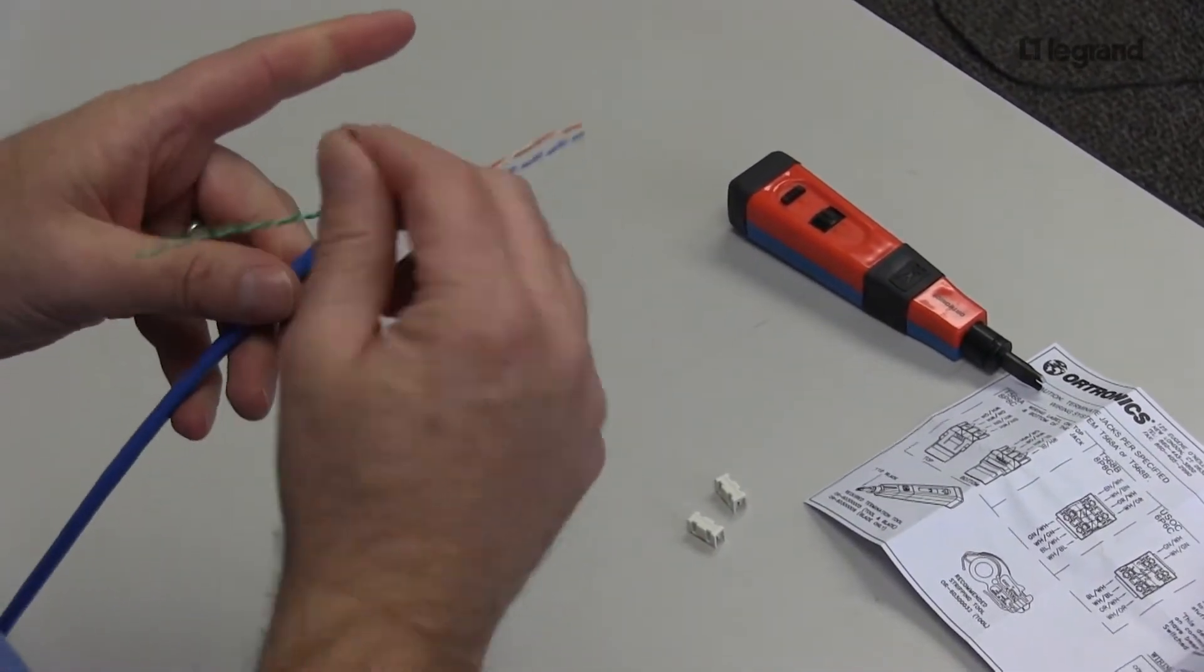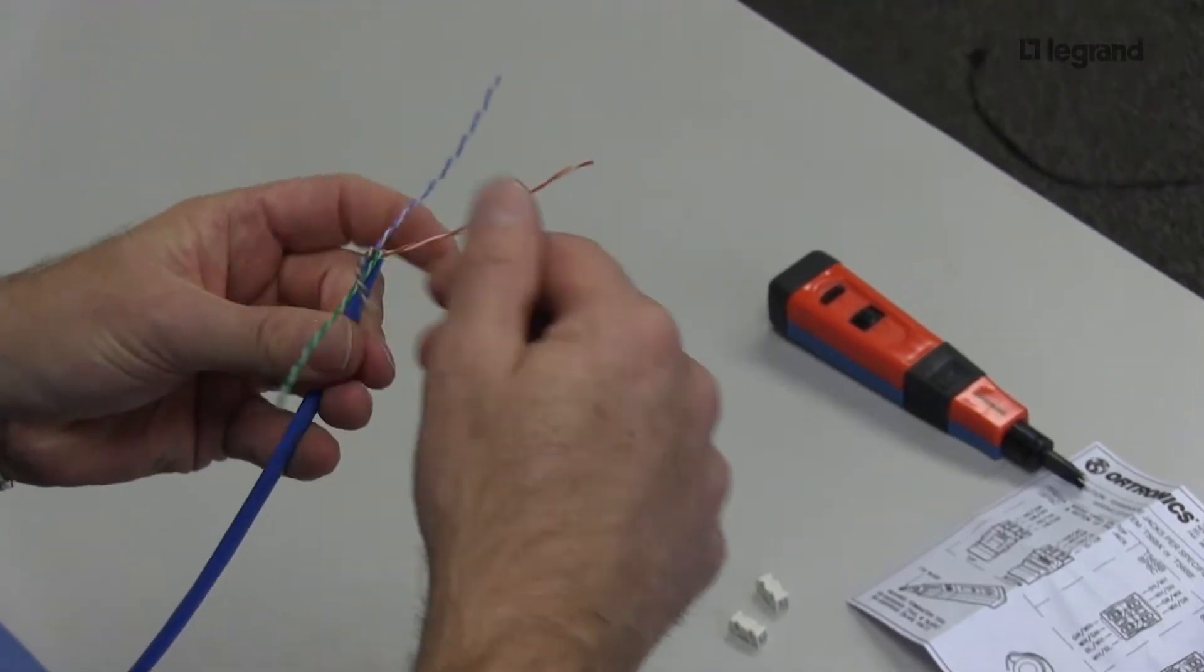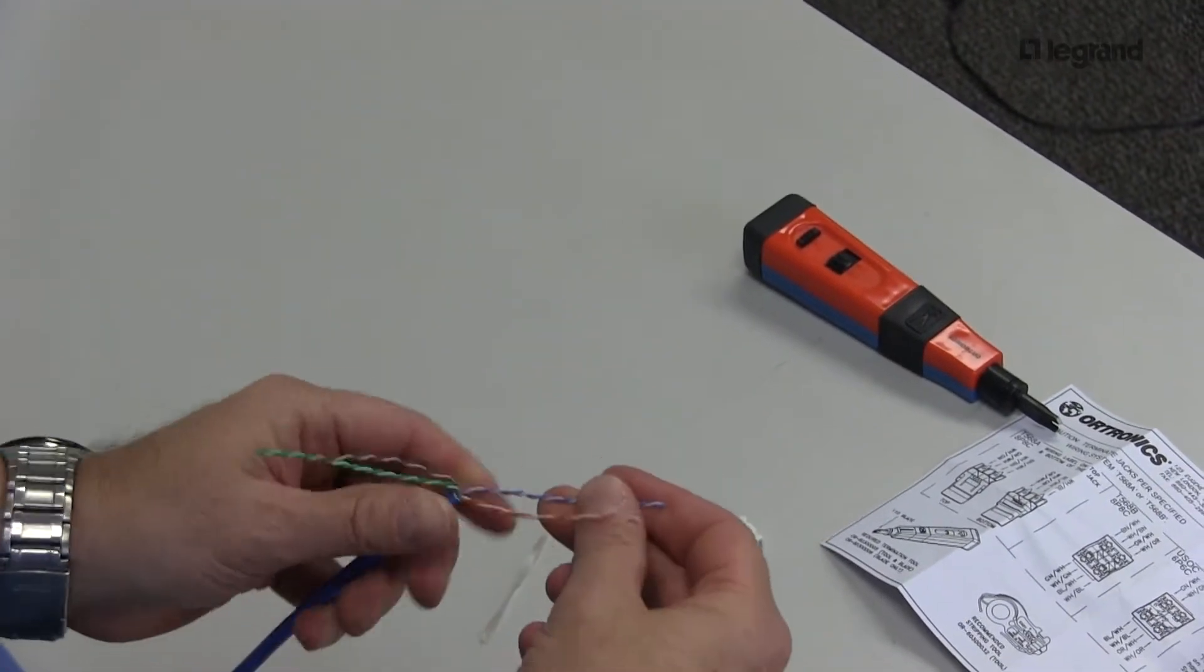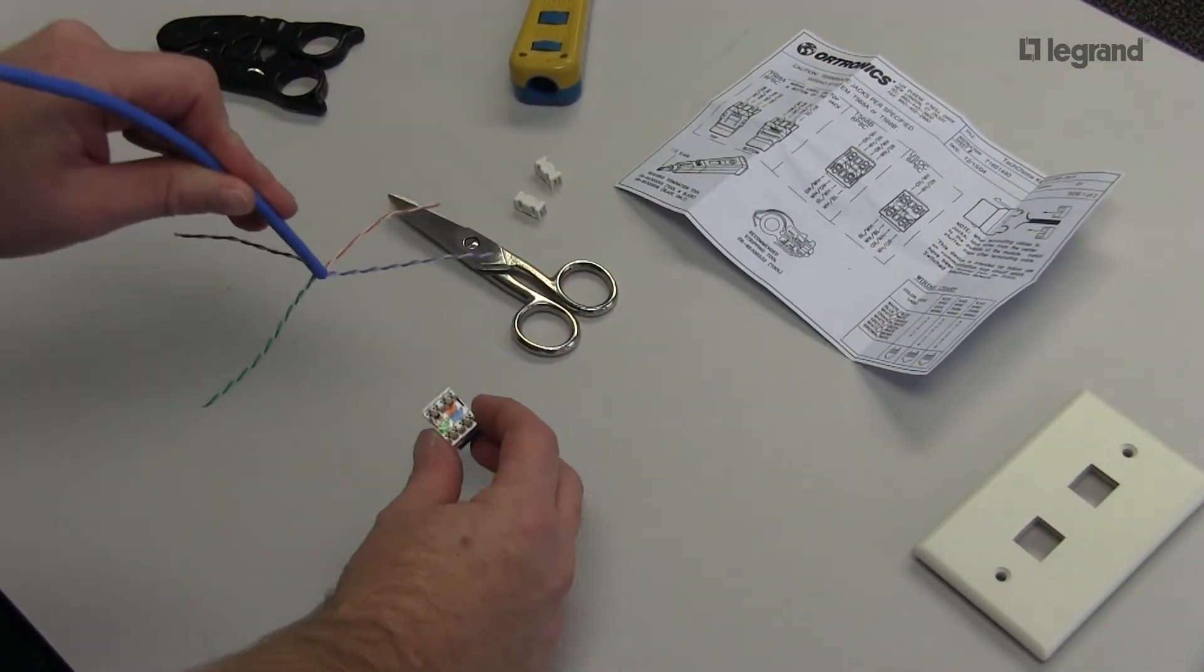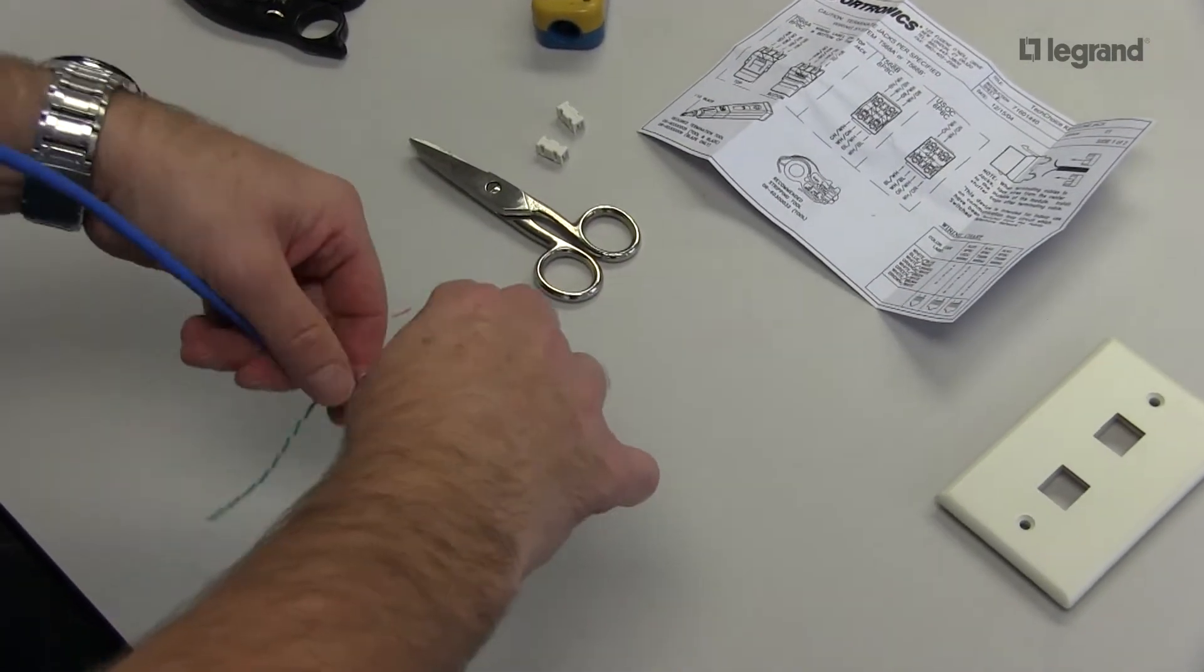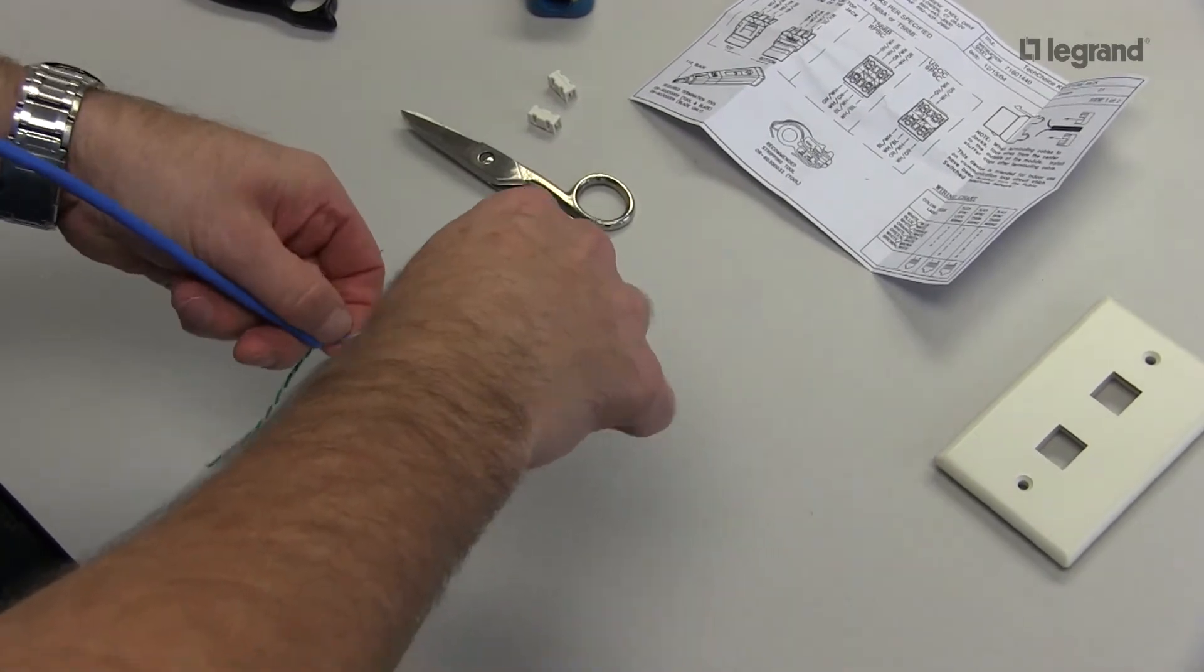And always remember for best practice, you're going to want to maintain your twists as tight as possible to your punchdowns. So I've separated my pairs to align with my module, and I'll start separating my individual conductors.